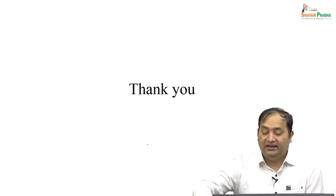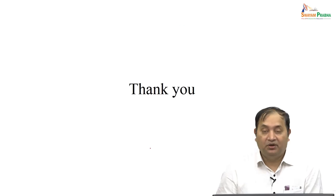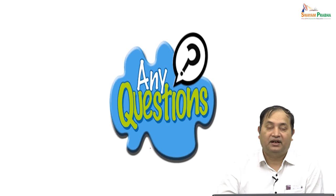To summarize antiplatelet drugs: the classification starts with the very old aspirin, then dipyridamol, then purinergic receptor blockers like clopidogrel and various newer drugs, and also GP2B/3A receptor antagonists like abciximab. Some of these are used as add-on therapy in resistant cases like aspirin resistance. All have a risk of bleeding — especially intracranial bleeding — so caution is needed when prescribing. This is what antiplatelet drugs are used for. If you have any questions or want to discuss, kindly go ahead. Thank you.